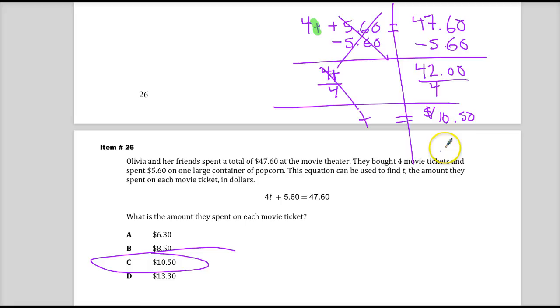Can you test it? Sure, just do $10.50 times 4, and then add $5.60 to it. And it gets you back to 47.6, which is 47.60. So you know this is the right answer. Could you have done that in the beginning? Yes.